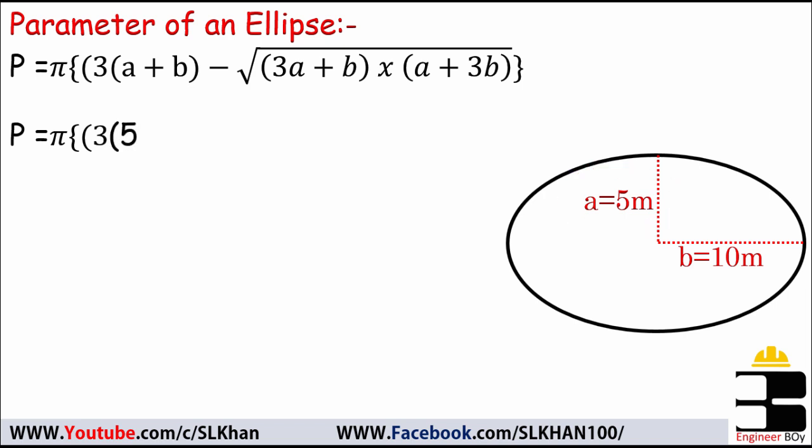P equals π times 3a, and a is of course known, that is 5, plus b which is 10, minus square root of 3 times a which is 5 plus b that is 10 times a which is 5 plus 3b and b is 10.